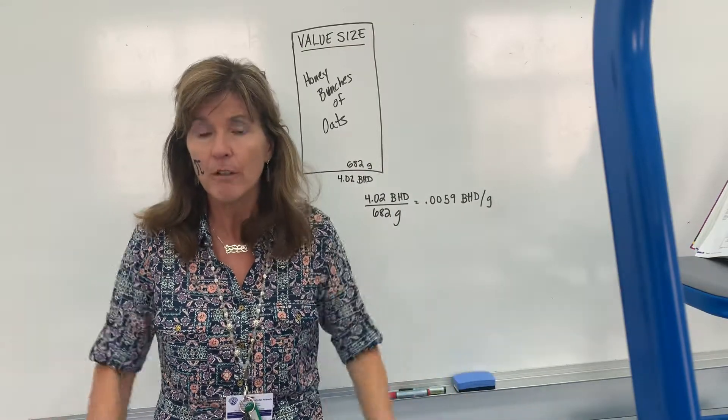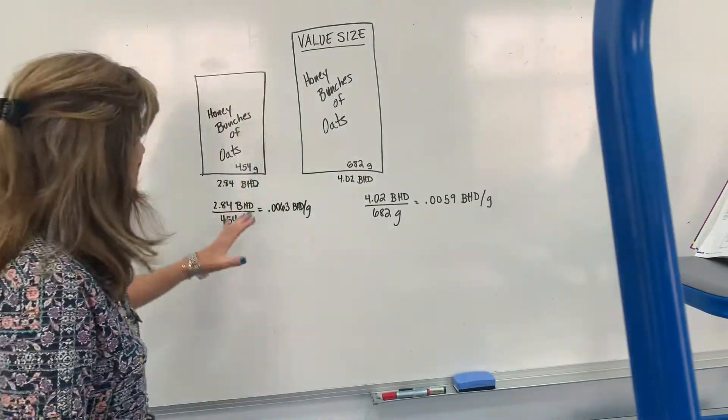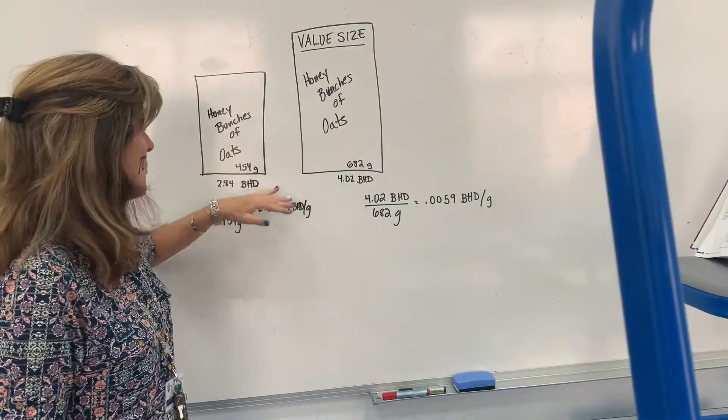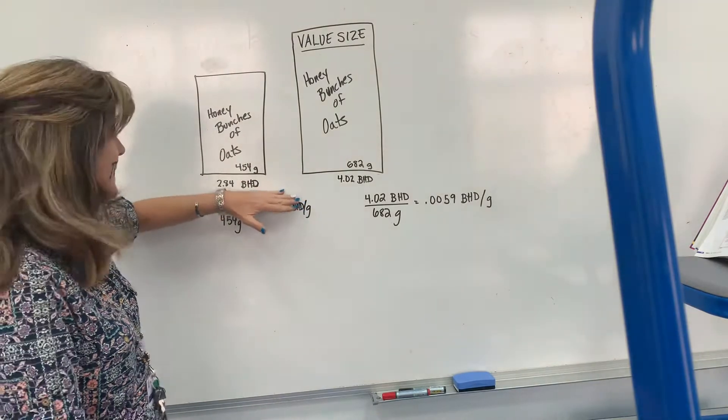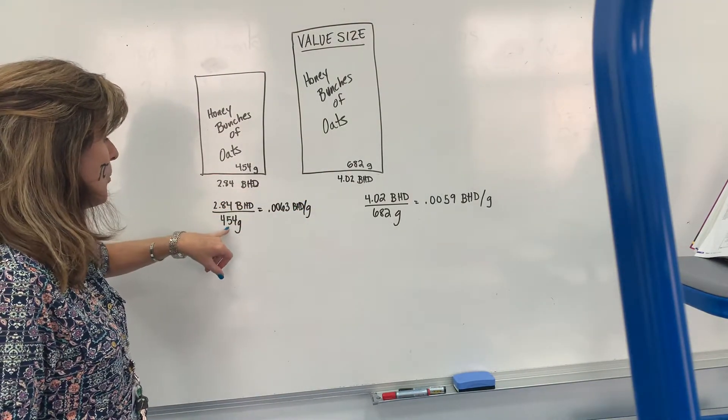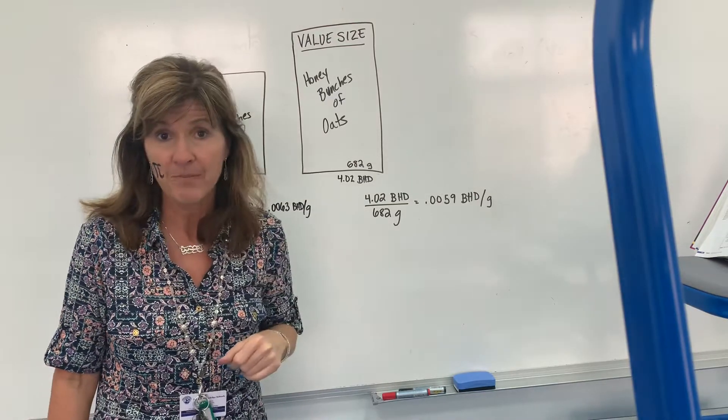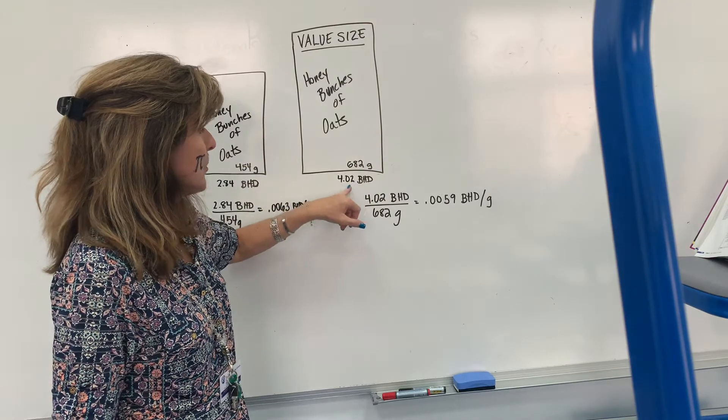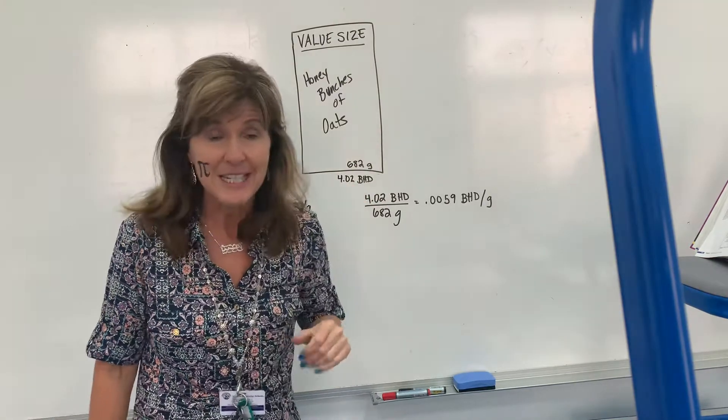So this smaller box was 454 grams, so the ratio for this first one is 2.84 BDs per 454 grams. And then the second one was 682 grams and 4.02 BDs, and you can see the ratio here.